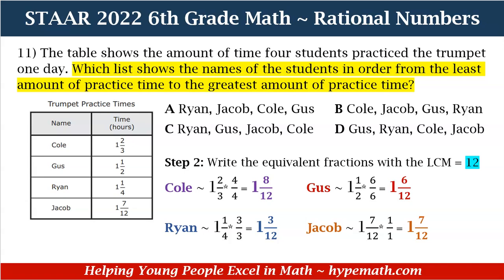Now let's go to Gus. Gus is 1 and 1 half. What number times 2 is equal to 12? That is 6. So I'm going to multiply the numerator and the denominator by 6. 1 times 6 is equal to 6, and 2 times 6 is equal to 12. So our equivalent fraction for Gus is 1 and 6 twelfths. Now let's move to Ryan. Ryan's fraction is 1 and 1 fourth. What number multiplied by 4 is equal to 12? That is 3. So I'm going to multiply my numerator and my denominator by 3. 1 times 3 is equal to 3, and 4 times 3 is equal to 12. So my equivalent fraction for Ryan is 1 and 3 twelfths.